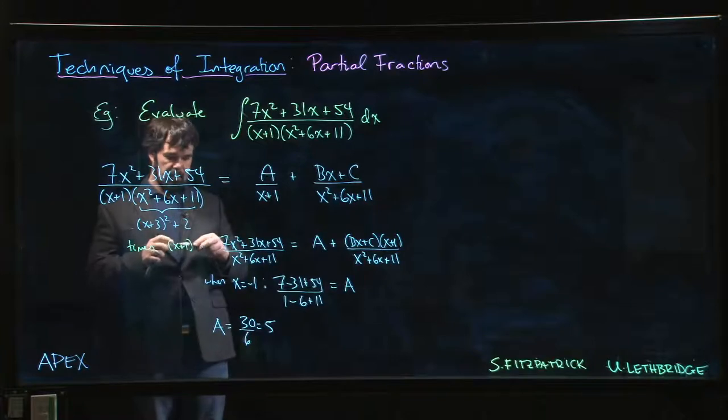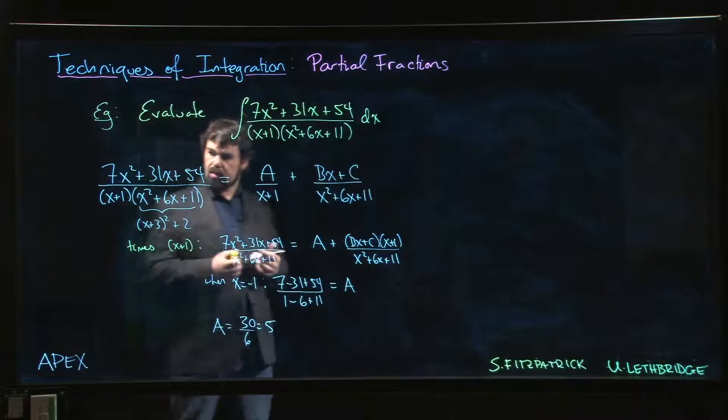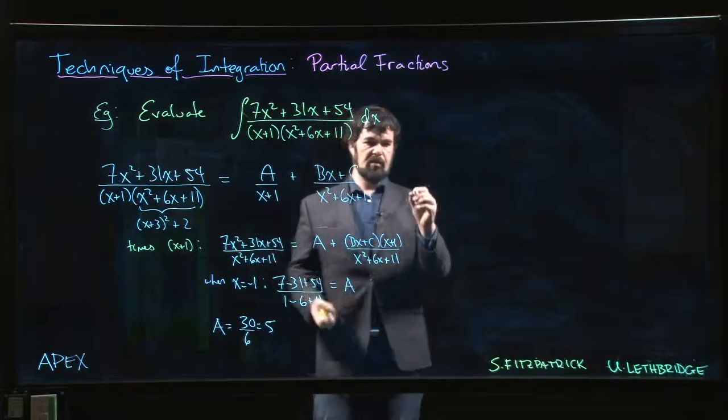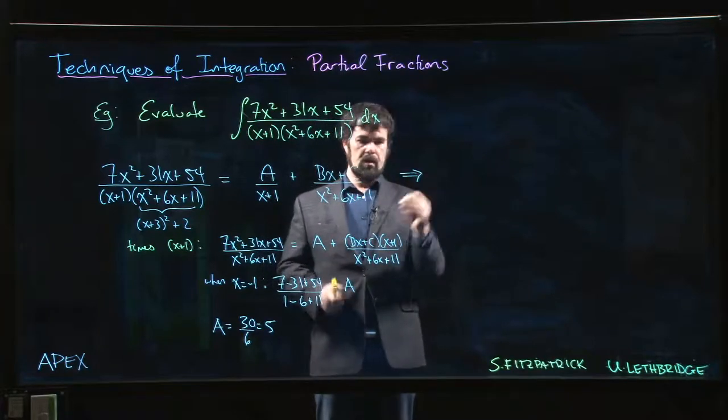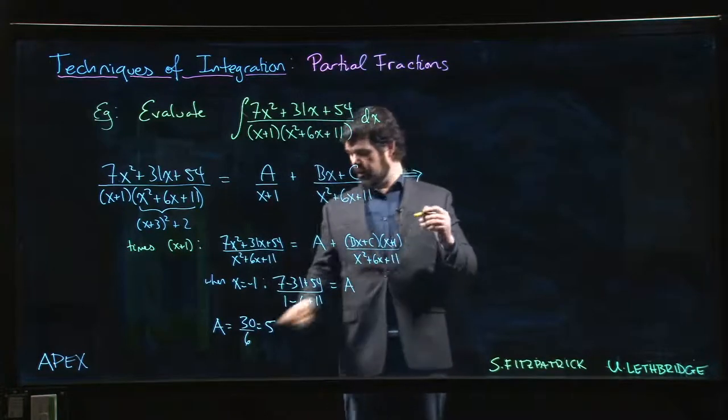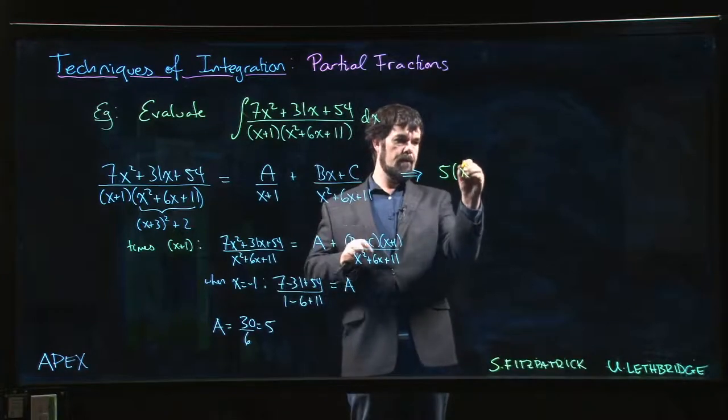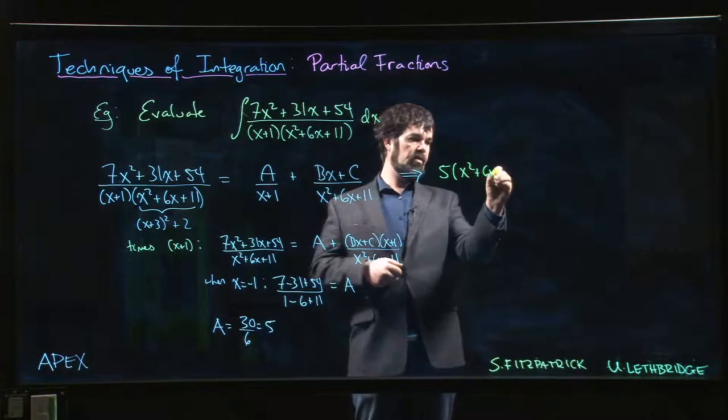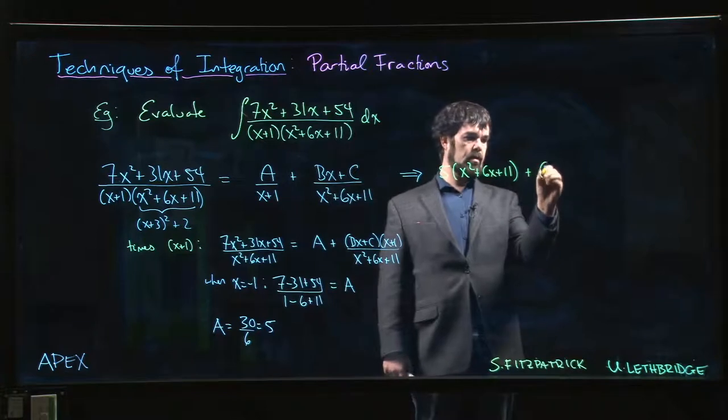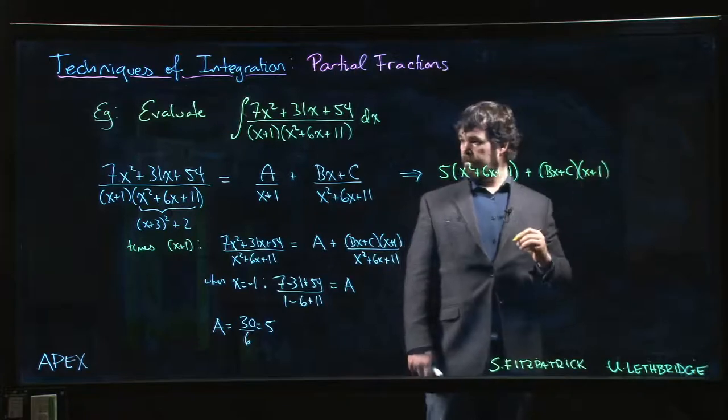We still have B and C to figure out. So for B and C, there's not a lot you can do other than kind of go back to the other method that we were using. So we can say, okay, if I get a common denominator and then ignore it, I have A, and now we know that A is 5.